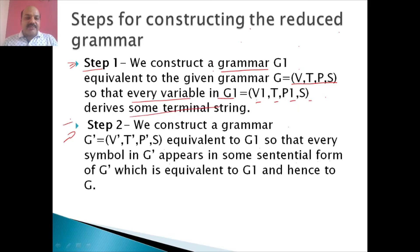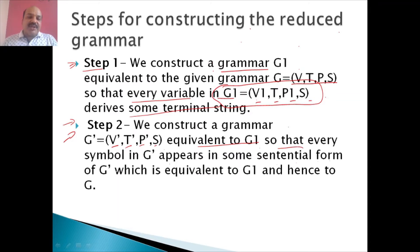P1 and S — will derive some terminal string. And in step two, we are going to construct a grammar G prime consisting of V prime, T prime, P prime and S, equivalent to G1, so that every symbol in G prime appears in some sentential form of G prime, which is equivalent to G1 and hence to G.